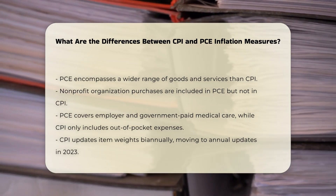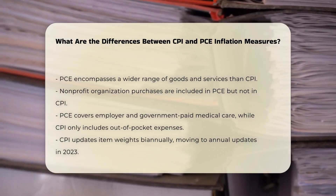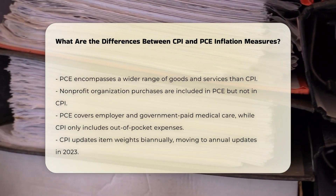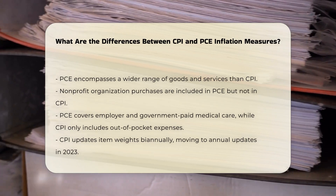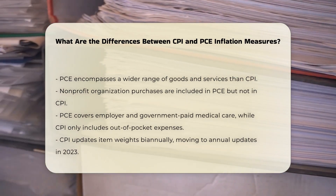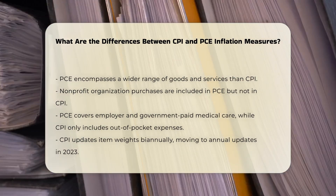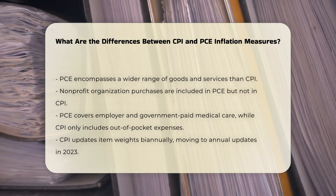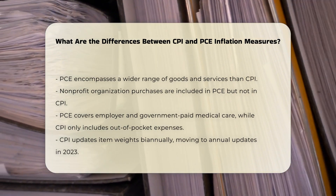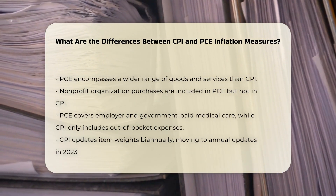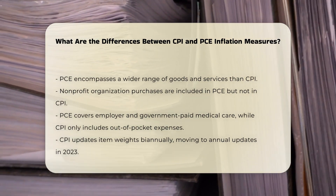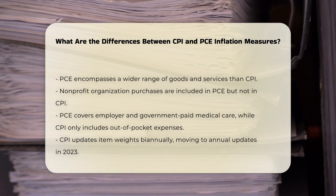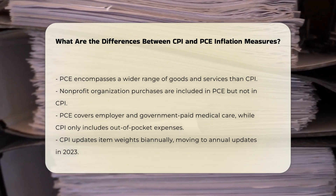Formulas and weighting. The formulas used to calculate the CPI and PCE differ significantly. The CPI uses an index formula that updates item weights biannually, moving to annual updates in 2023, while the PCE updates item weights every quarter.